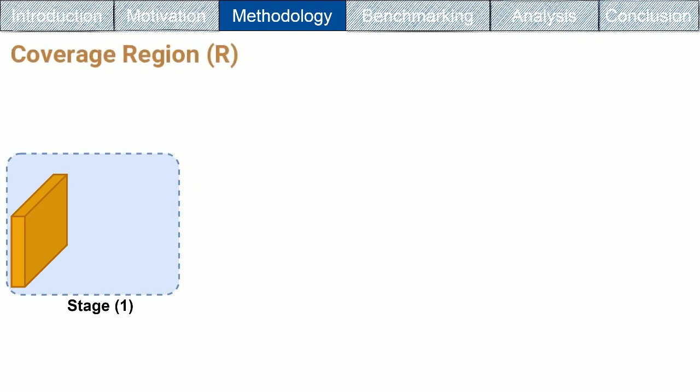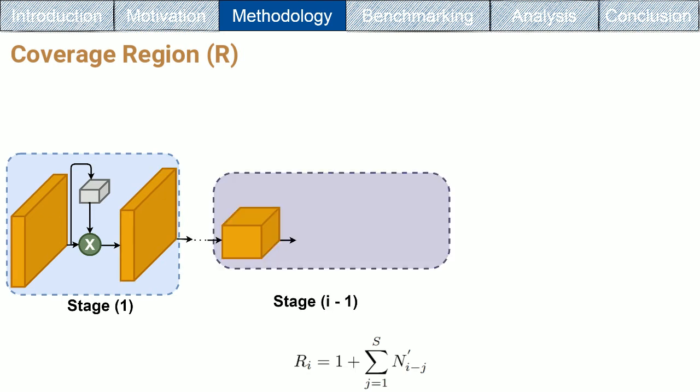To control the information flow between CNN blocks, we introduce the coverage region R. Our coverage region is formulated by this equation, where the 1 indicates the associated connection, S indicates the number of the stages, N indicates the number of the blocks output.